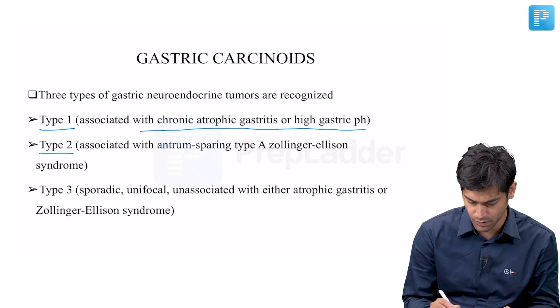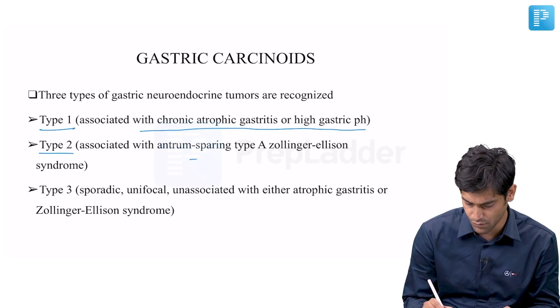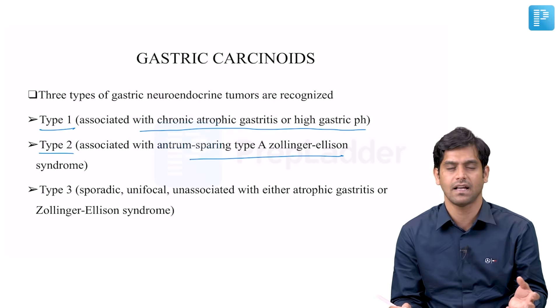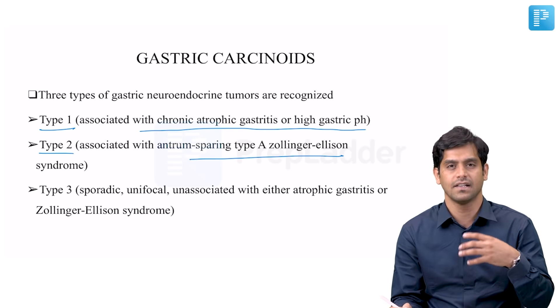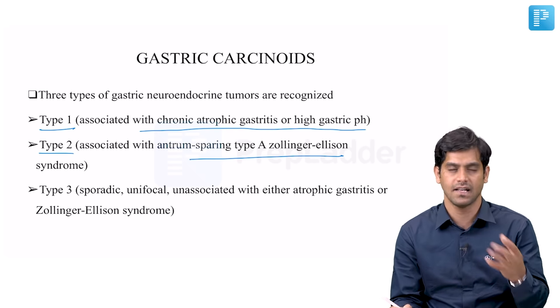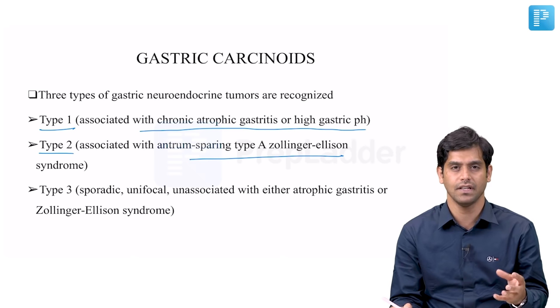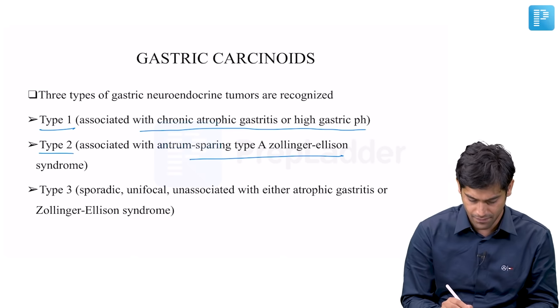Type 2 is associated with Zollinger-Ellison syndrome. Again, there is hypergastrinemia — the same cycle of gastrin stimulating the enterochromaffin cells, predominantly the histamine-producing H2 cells, to proliferate and causing the tumor.